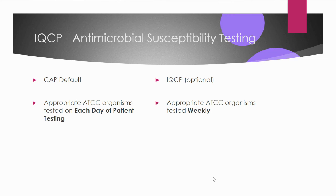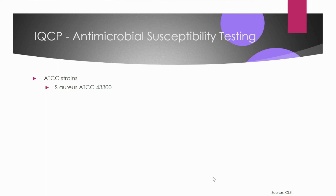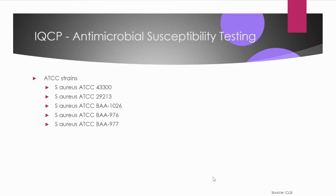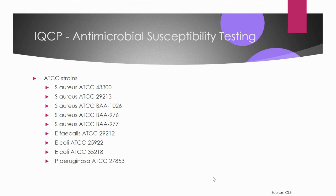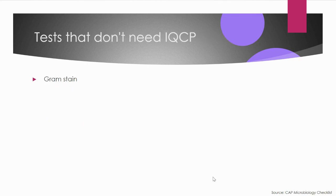For antimicrobial susceptibility testing IQCP, the CAP default requires appropriate QC organisms every day susceptibility testing is performed. Under IQCP, this frequency can be reduced to weekly. ATCC strains commonly used include Staphylococcus aureus MRSA and MSSA strains, beta-lactamase positive and negative Staph aureus, Enterococcus faecalis, E. coli, E. coli beta-lactamase positive, Pseudomonas, Klebsiella, and Haemophilus for ESBL testing.